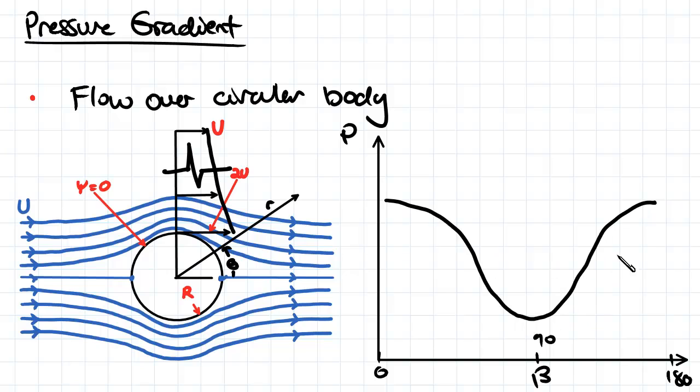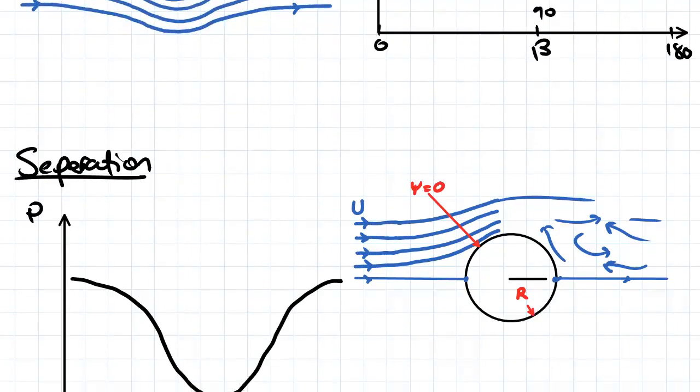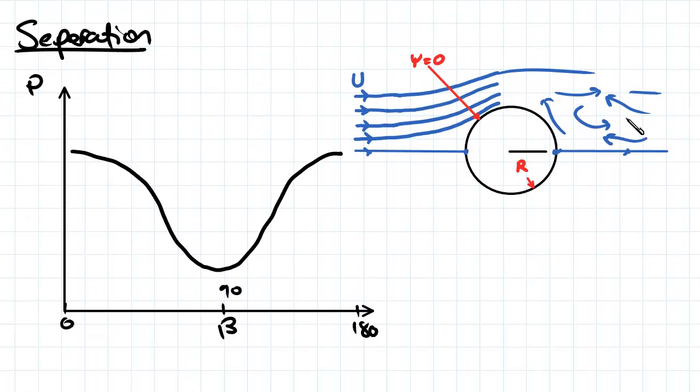However, this is only theoretical, this curve here. As our flow actually goes over the cylinder, we actually get what's called flow separation occurring in this region here.